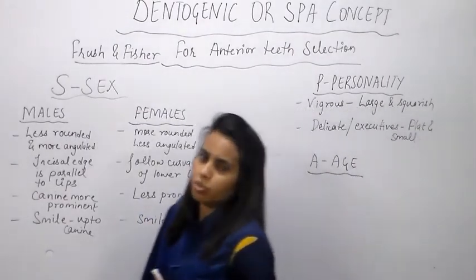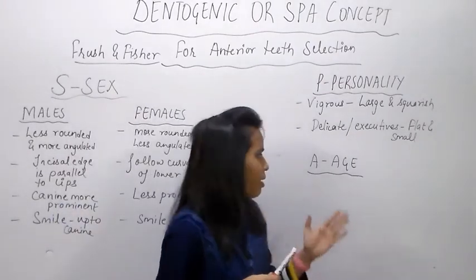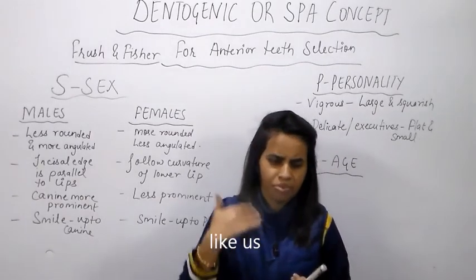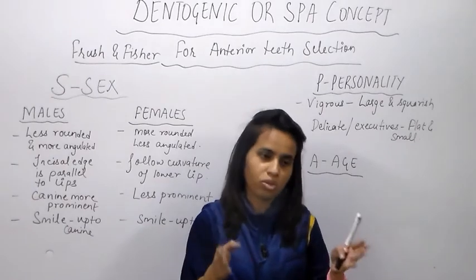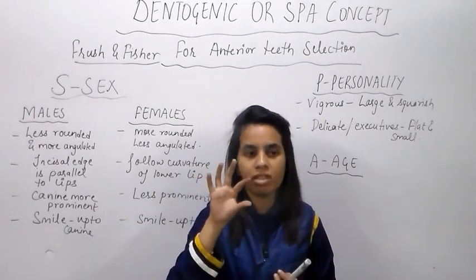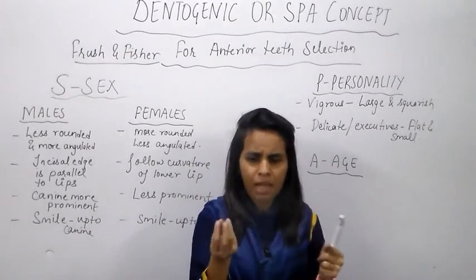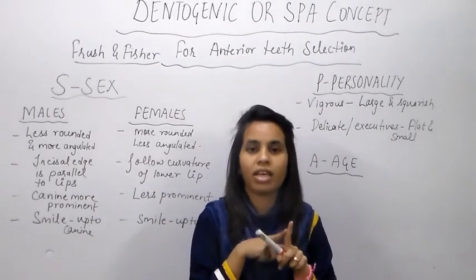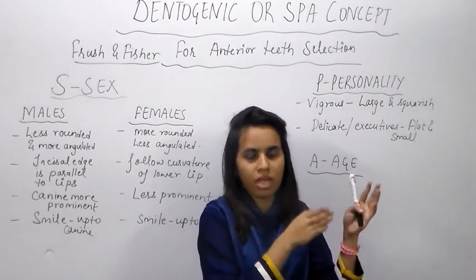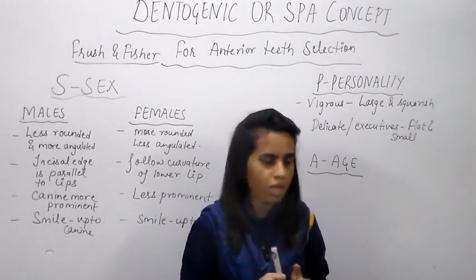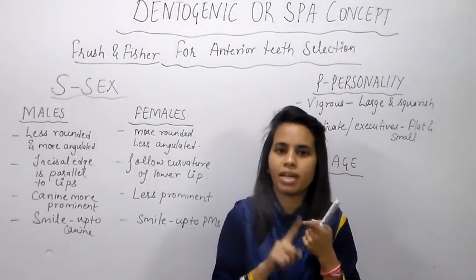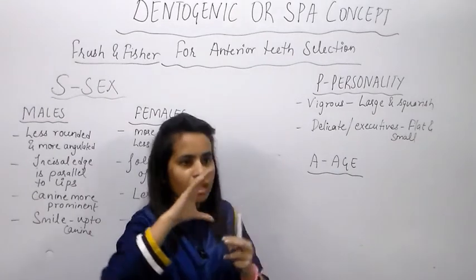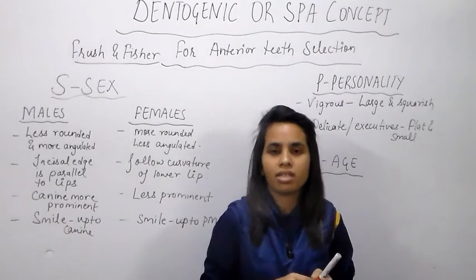The next factor is age. According to age, the tooth form should change, as there are many changes in a patient's teeth with age. Old age patients have abraded teeth, so anterior teeth should also appear abraded. According to age there is also gingival recession, which should be visible in the denture as well. Due to abrasion, enamel loss occurs, dentine becomes visible, causing a yellowish tint in the teeth due to staining.